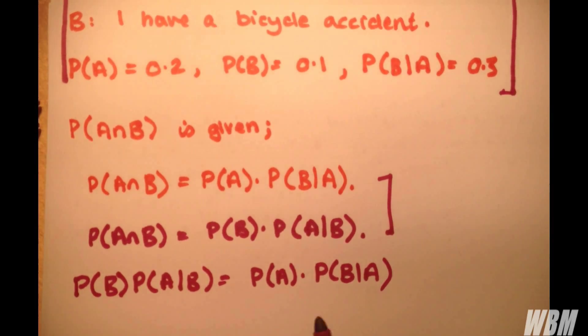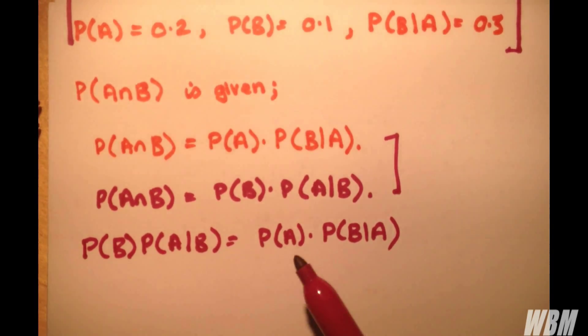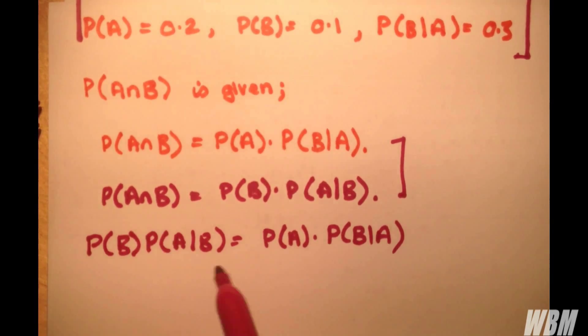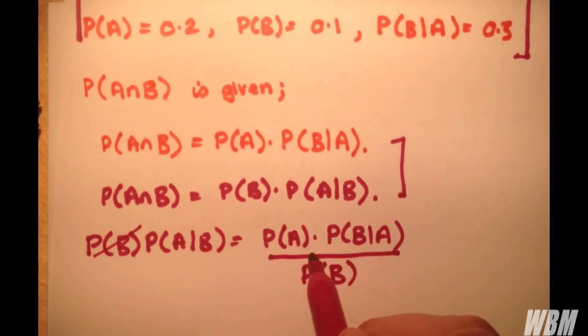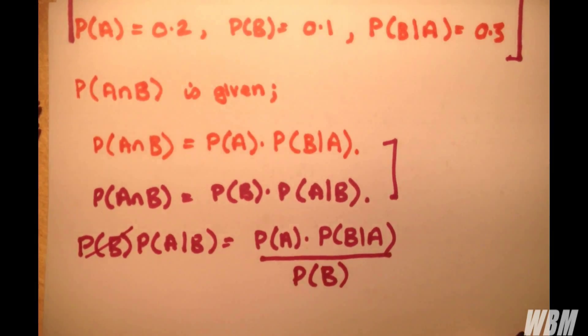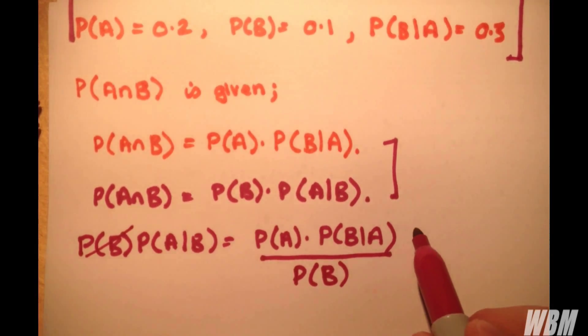So how do I find out probability of A given B? Well, if I rearrange the equation, or should I say I divide throughout by probability B, then I have it in the form probability A given B equals probability of A multiplied by probability of B given A divided by probability of B. And funnily enough, this is actually the derivation. This is how we get to Bayes' theorem, and this is actually a form of Bayes' theorem here.